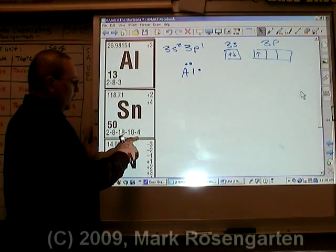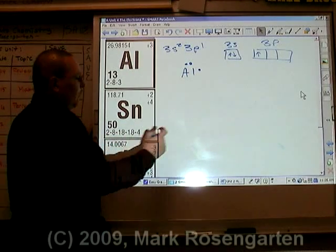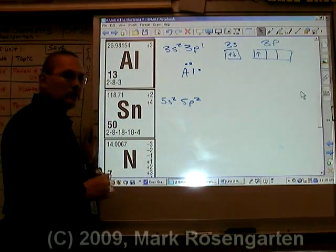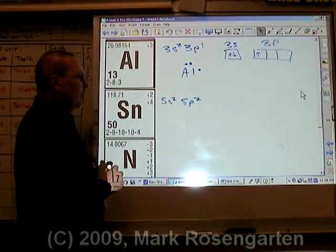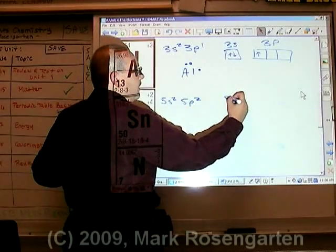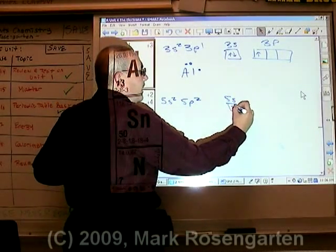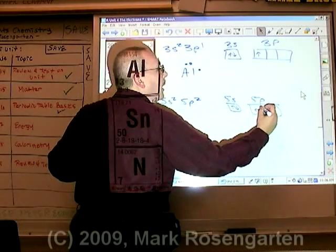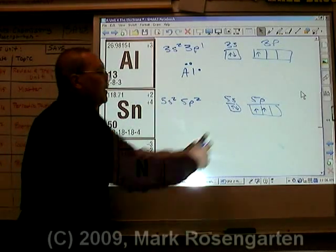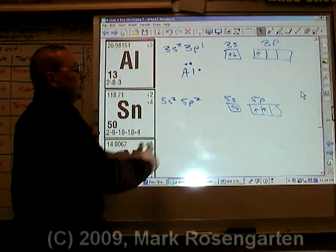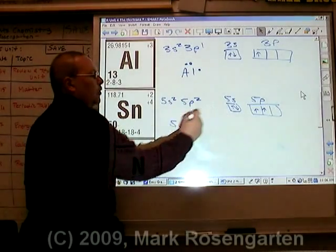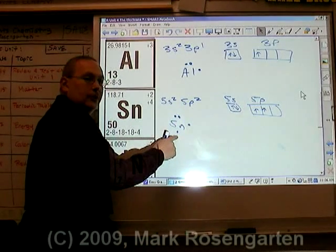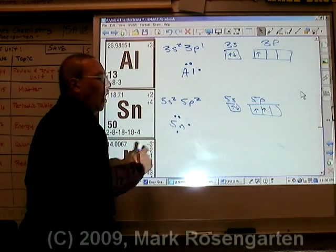Tin has four valence electrons in the fifth energy level: 5s2, 5p2 — that accounts for the four electrons. So that would be 5s: up, down; 5p: up, up, because the first two electrons go into separate orbitals. The dot diagram will reflect that — Sn with the two S electrons paired, then the two P electrons in different orbitals. We say these electrons are unpaired.